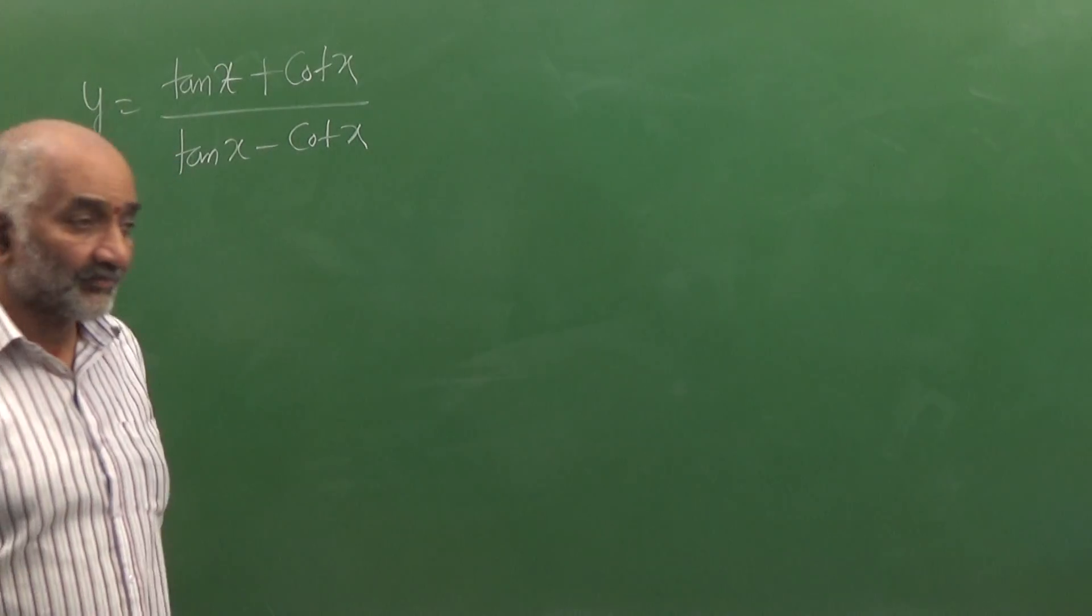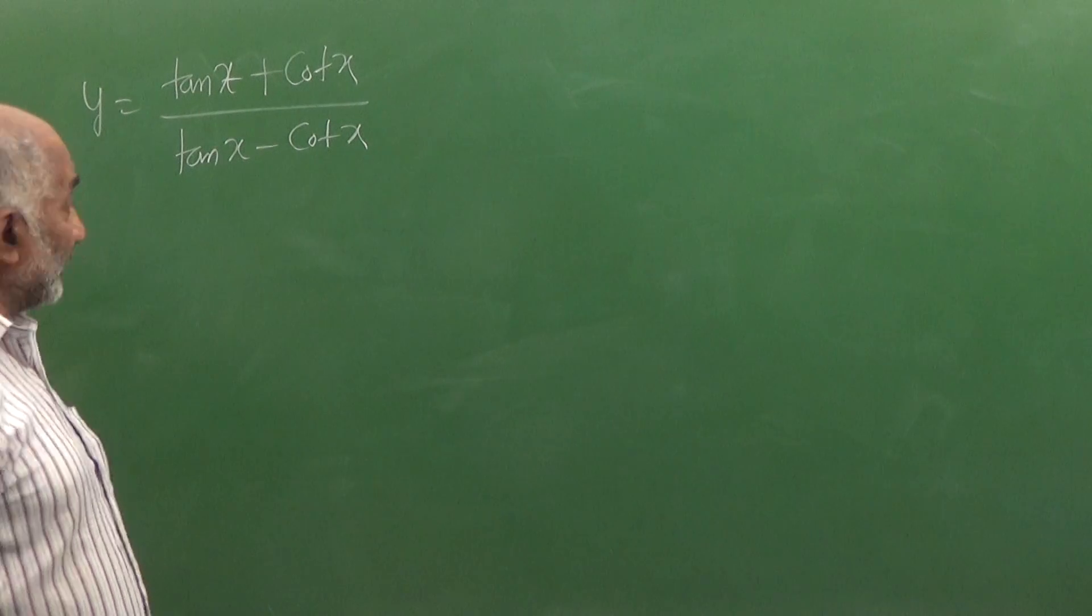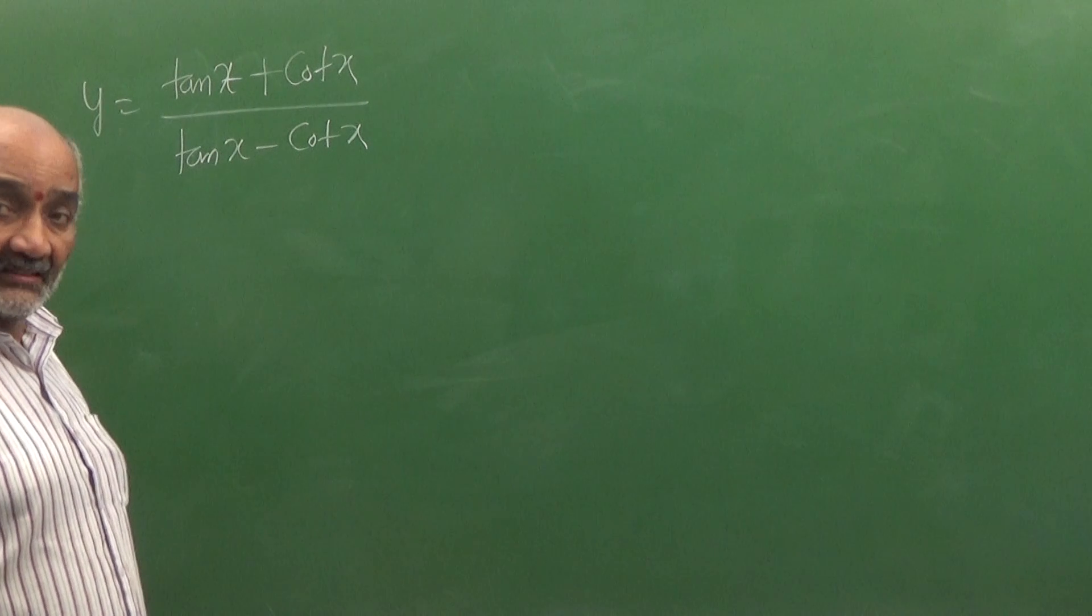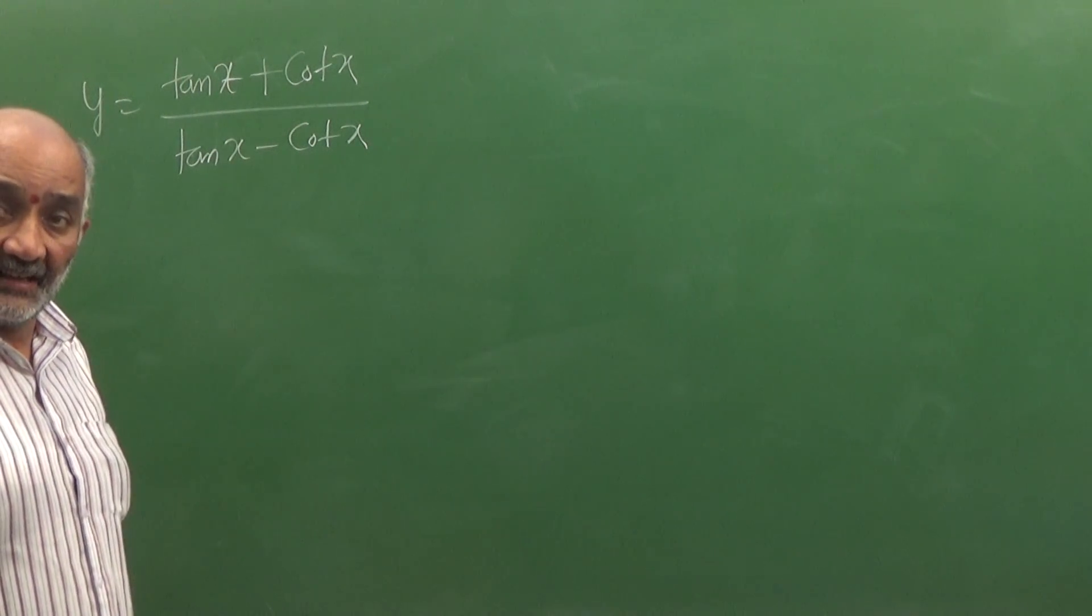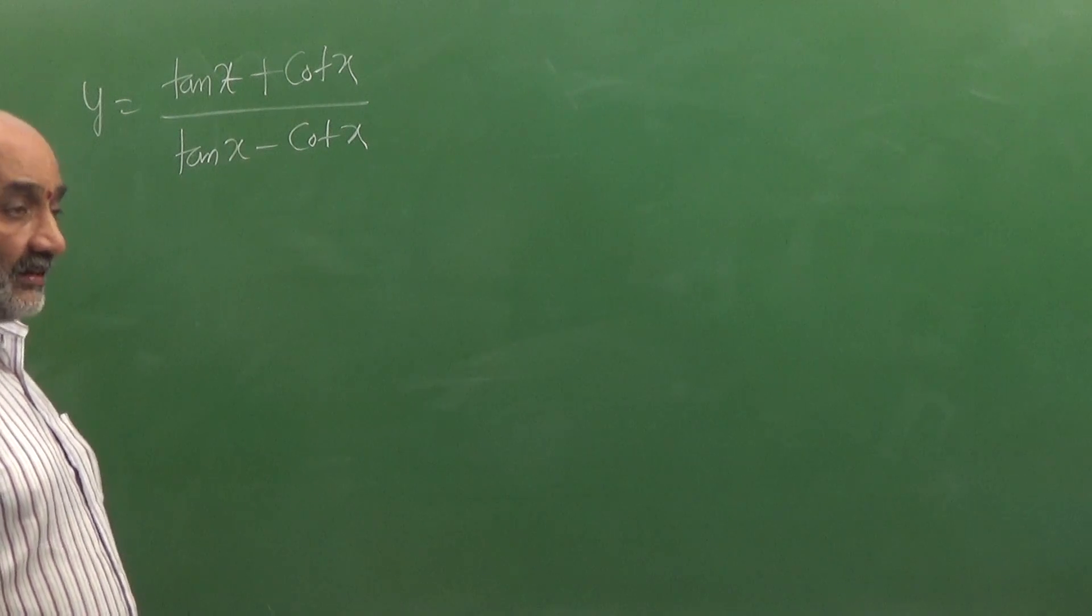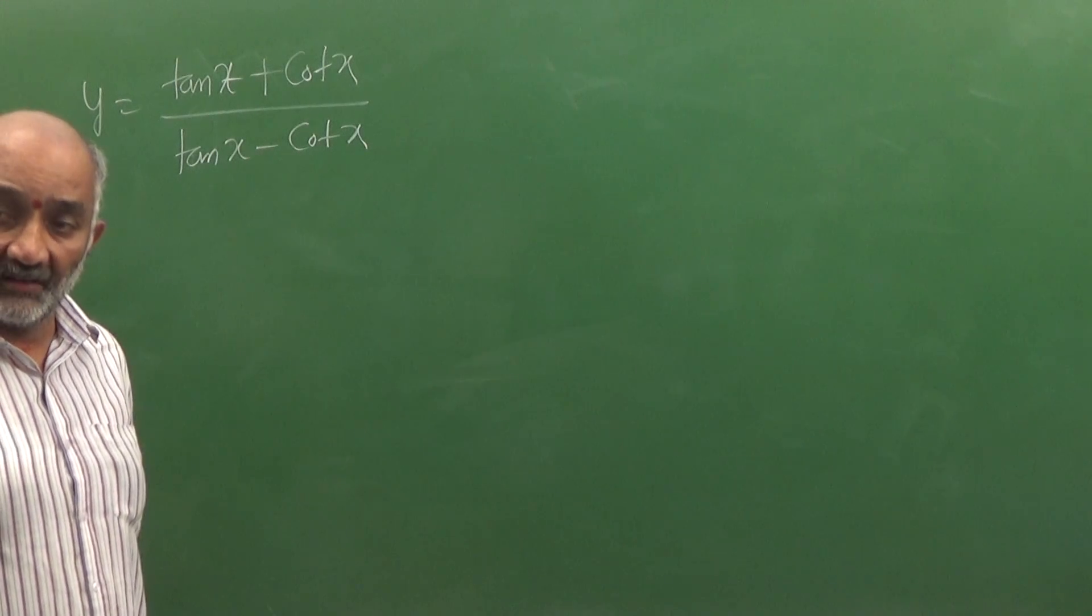y is equal to tan x plus cot x whole thing divided by tan x minus cot x. First of all, differentiating with respect to x.